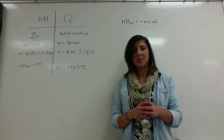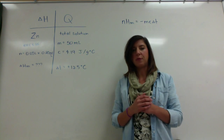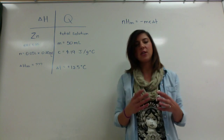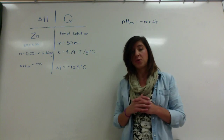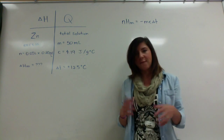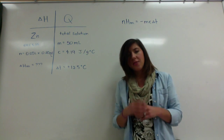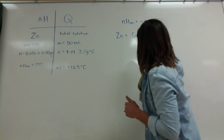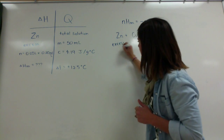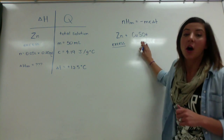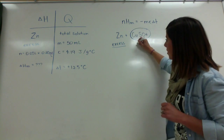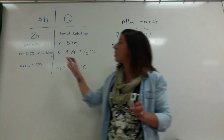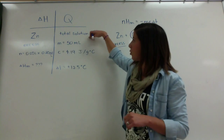Example two: When excess zinc is added to a 50 mL solution of 0.25 mol/L aqueous copper(II) sulfate, the calorimeter warms by 12.5°C. What is the molar enthalpy of the reduction of aqueous copper(II) ions? The temperature goes up, so this is an exothermic reaction and the molar enthalpy should be negative. Since zinc is in excess, 100% of the copper(II) sulfate reacts — it is the limiting reagent. The number of moles is 0.05 L × 0.25 mol/L.